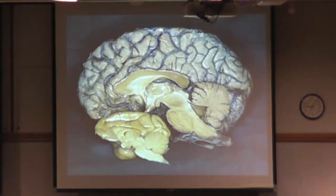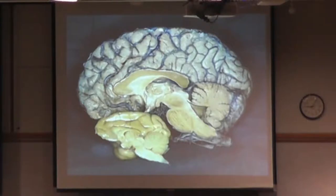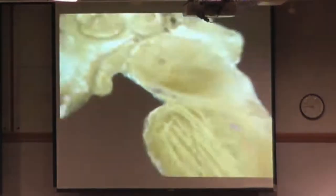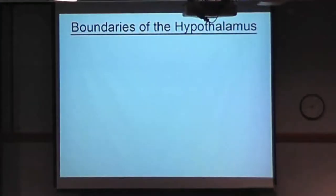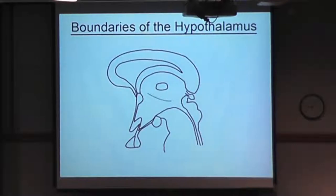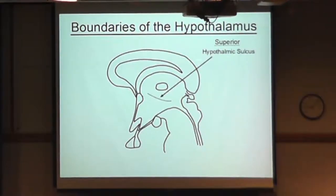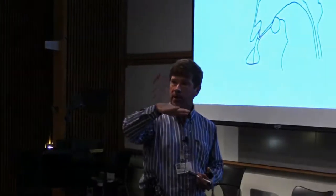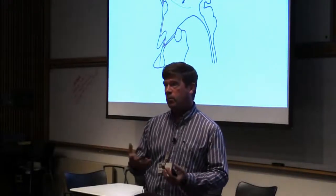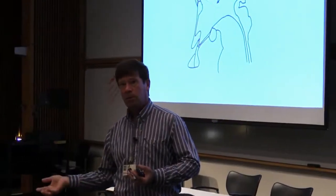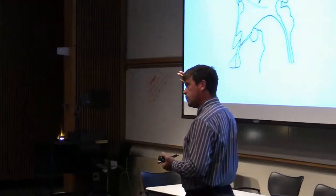Looking at a hemisected brain, we're going to zoom into the hypothalamus region. The superior boundary is the hypothalamic sulcus, which is the rostral continuation of the sulcus limitans. Because the hypothalamus sits ventral to the sulcus limitans, this basically identifies it as a motor structure — just as motor nuclei sit below the sulcus limitans and sensory nuclei sit dorsal to it. The thalamus above is a sensory nucleus; the hypothalamus below is essentially a motor structure.